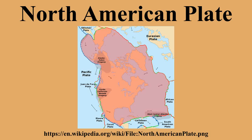The southerly boundary with the Cocos Plate to the west and the Caribbean Plate to the east is a transform fault, represented by the Cayman Trench under the Caribbean Sea and the Motagua Fault through Guatemala. The parallel Septentrional and Enriquillo Plantain Garden Faults, which run through the island of Hispaniola and bound the Gonave Micro Plate, are also a part of the boundary.